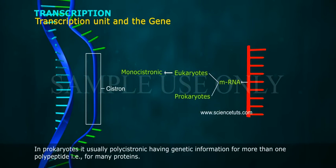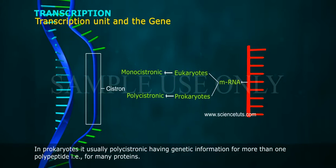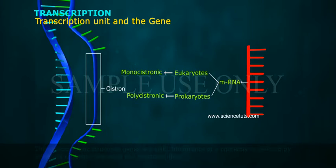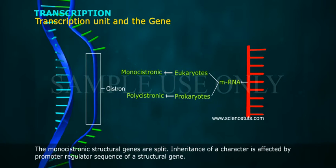In prokaryotes, mRNA is usually polycistronic, having genetic information for more than one polypeptide — that is, for many proteins. The monocistronic structural genes are split. Inheritance of a character is affected by the promoter-regulator sequence of a structural gene.